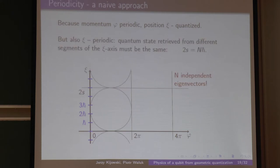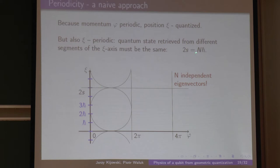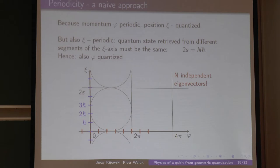Let us go this way. Also, psi is periodic, because the same sphere may be described by different segments, and we insist each representation be equivalent. This simply means that 2S must equal n times h-bar — which means we have only n independent eigenvectors, and the geographic longitude is also quantized.